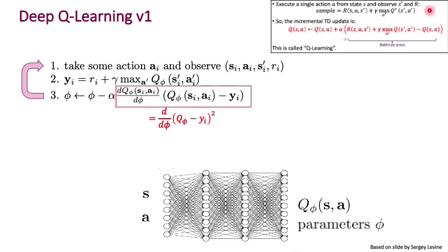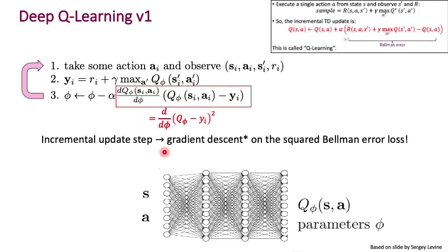And so we've gone from this incremental TD update over here to something that looks quite similar in that it also has a learning rate α. But really, over here, we are applying that learning rate α to the gradient of the squared Bellman error. So we've gone from the incremental update step to the gradient descent on the squared Bellman error loss. Now, there is an asterisk here, and we'll come back to that soon, because it's not quite as simple as standard gradient descent like we've seen so far.